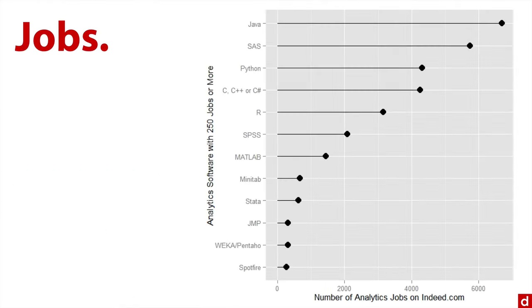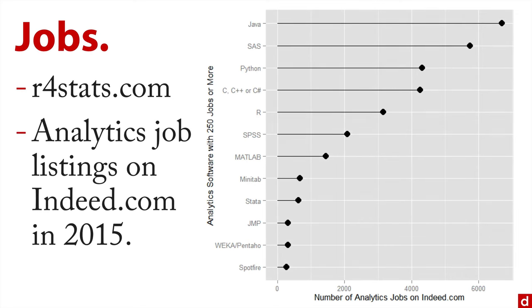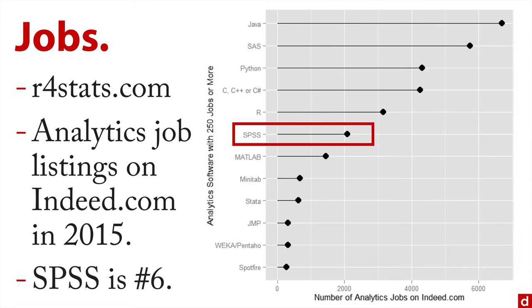You can also look at jobs. Here's another chart also from r4stats.com. What this shows is analytics job listings on indeed.com in 2015, one major source of tech jobs. SPSS is on the list, but this time it's actually a lot lower — it's number six. So there is a difference here between academic publishing and employment in analytics.